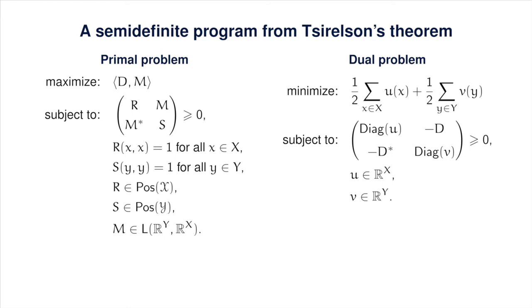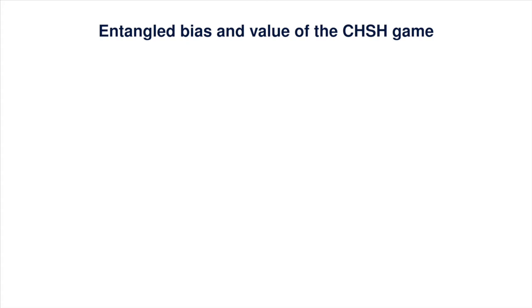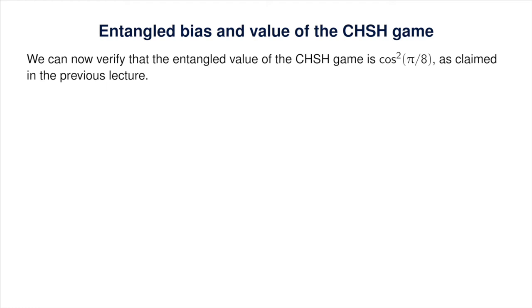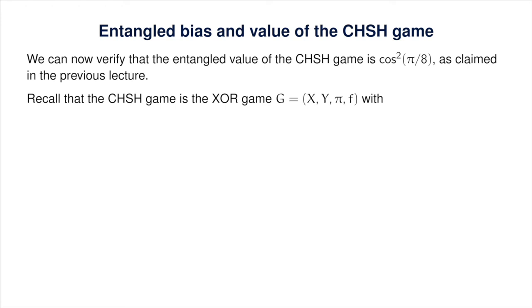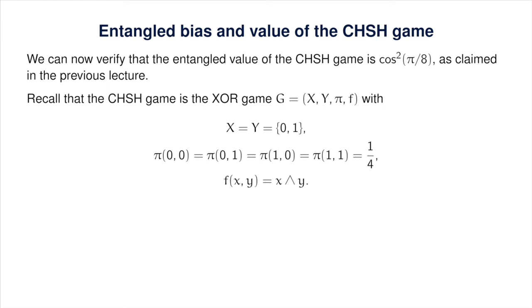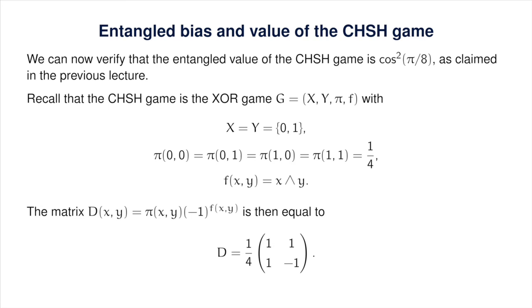We'll cover two applications of this SDP formulation of the entangled bias of XOR games. The first is to verify that the entangled value of the CHSH game is cos²(π/8), as stated in the previous lecture. The CHSH game is the XOR game with X and Y both the binary alphabet, pi uniform, and f the AND function. The matrix D appearing in the SDP for this game is proportional to the matrix associated with the Hadamard transform.